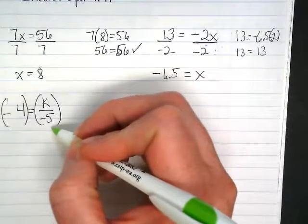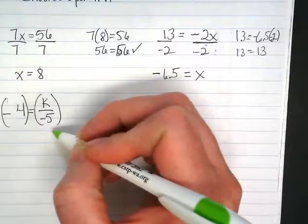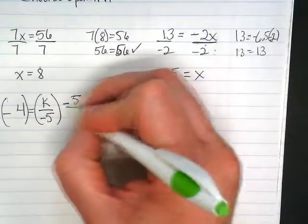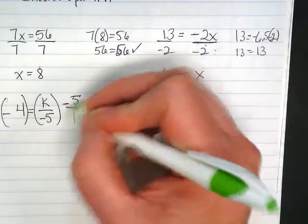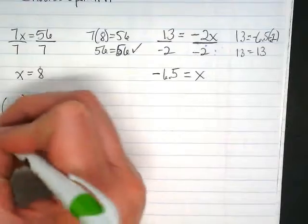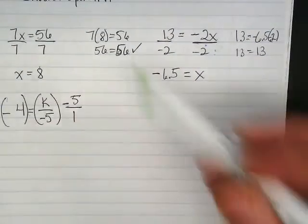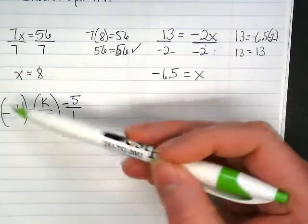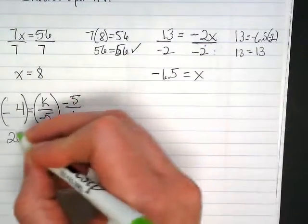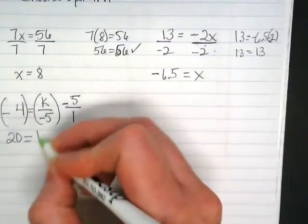So I'm going to multiply something by this to get that k by itself. I want to turn that negative 5 as a denominator into a positive invisible 1. So I'm going to multiply by negative 5 over 1. That's the reciprocal. And then I'm going to multiply over here by the same thing.